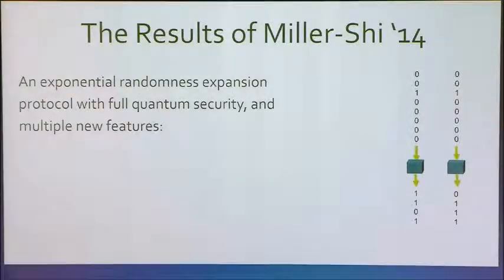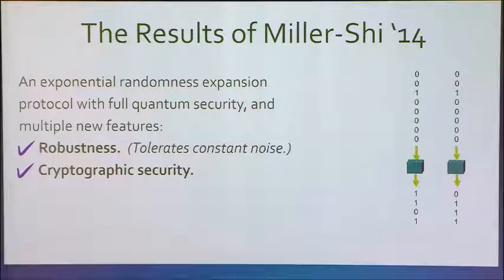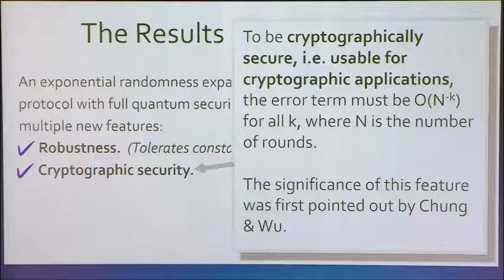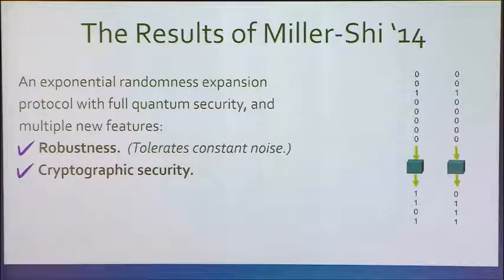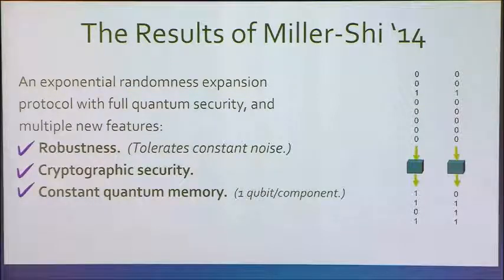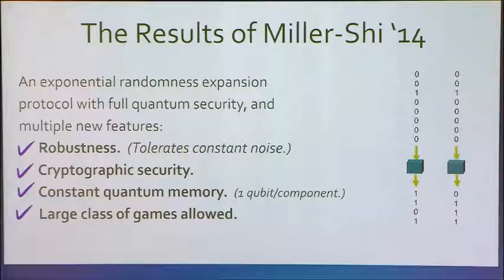Here are the results. We have an exponential randomness expansion protocol with full quantum security, and the following features which, as far as we know, are all new. We have robustness: there's a certain constant level of noise that can be tolerated. We have cryptographic security: the error term vanishes at a super-polynomial rate in the number of iterations of the protocol, which is a crucial property for any cryptographic applications. We have constant quantum memory: since we don't have to separate the devices completely, we can allow them to communicate in between rounds — they only need to hold a constant amount of entanglement at any given time. And a large class of games is allowed — CHSH is one, but there are many others for which the same level of security applies.